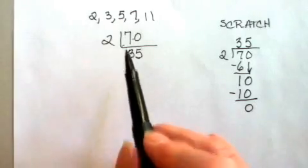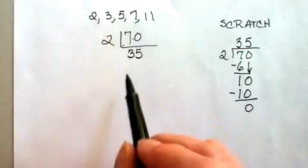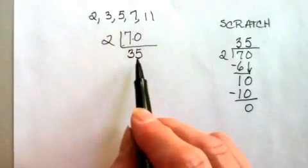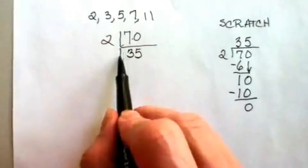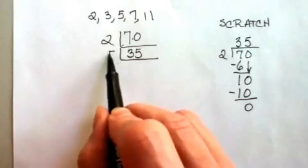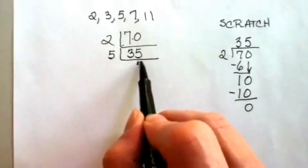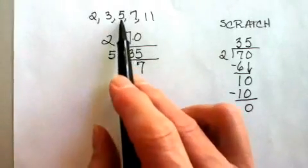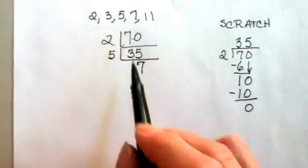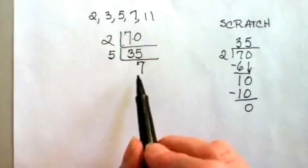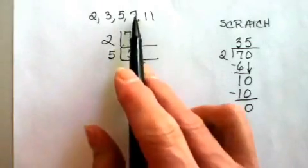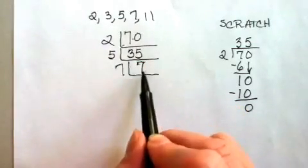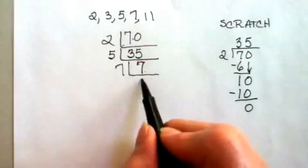Let's move to the next prime number, 5. Does 35 divide by 5? Yes it does since it ends in a 5. 35 divided by 5 is 7. Does 7 divide by 5? No. So I move to my next prime number. Does 7 divide by 7? Yes. 7 divided by 7 is 1.